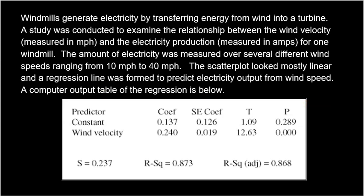Here is the problem. Windmills generate electricity by transferring energy from wind into a turbine. A study was conducted to examine the relationship between wind velocity measured in miles per hour and electricity production measured in amps for one windmill. The amount of electricity was measured over several different wind speeds ranging from 10 to 40 miles per hour. The scatter plot looked mostly linear, and a regression line was formed to predict electricity output from wind speed. A computer output table of the regression is below.